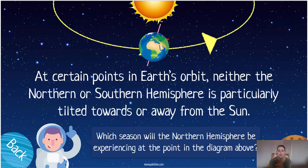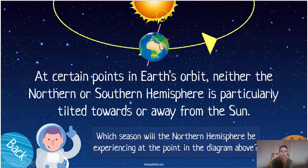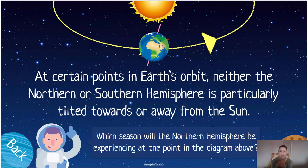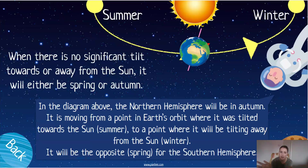One hemisphere will experience summer and the other winter, but there are other points in Earth's orbit where neither hemisphere is tilted right towards or right away from the sun. So which seasons do you think they will experience? Here we know the red position is experiencing summer — so what about when it's closer to the sun but not quite at maximum tilt? And this one here — it's not exactly furthest away, but it's in between, moving from cold weather towards warmer weather.